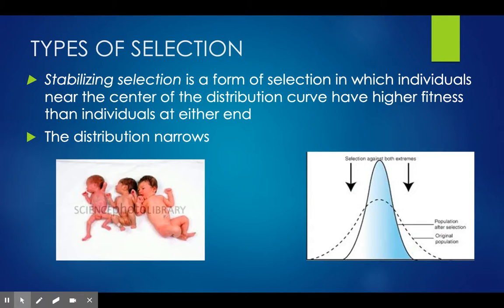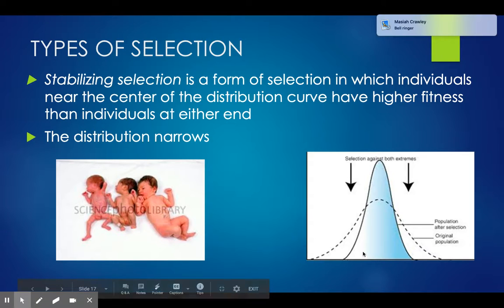Stabilizing selection is a form of selection in which individuals near the center of the distribution curve have a higher fitness than individuals at either end. The distribution curve narrows, getting more intense towards the middle instead of the smooth curve seen at the extremes.